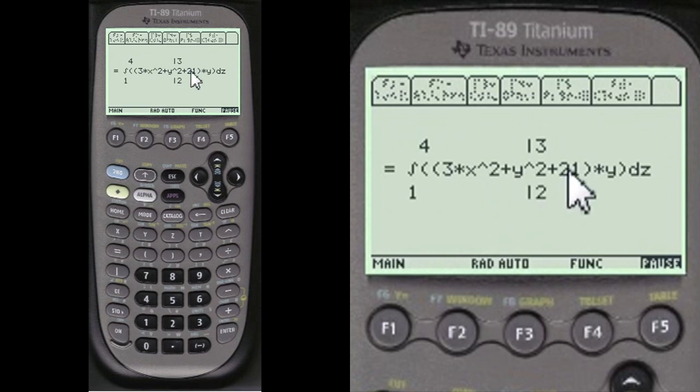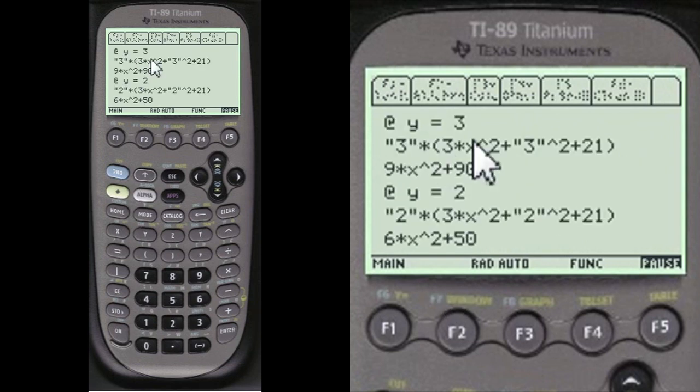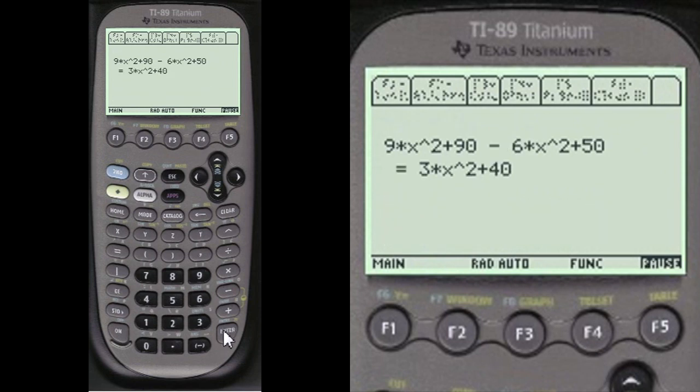Here's the integration of that. And then we're going to integrate over 3 and 2. At y equals 3, here's the answer. At y equals 2, here's the answer. And upper limit minus the lower is 3x squared plus 40.